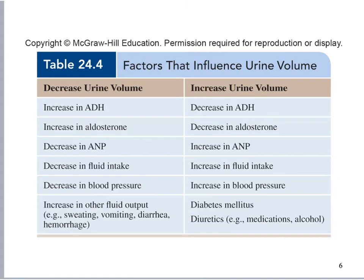The urine I produced that night was almost solid — dark, dark yellow. I was losing lots of fluid sweating and didn't drink as much fluid as I should have. The result was increased ADH and increased aldosterone to help reabsorb water going through glomerular filtration. The urine was super concentrated, kind of looked like orange juice. I don't think I recovered for two days after that.